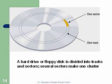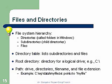Files and directories form the file system hierarchy. Directories are called folders in Windows. Subdirectories are child directories or subfolders inside another folder. The directory table lists all subdirectories and files. You have a root directory — the directory for the logical drive, for example the C drive. The path consists of the drive, directories, file name, and file extension. For example: C:\WP\data\myfiles — this illustrates a path for locating a file.